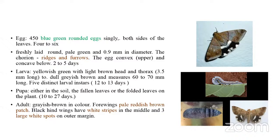The larval period lasts from 12 to 13 days. Pupation takes place either in the soil amidst fallen leaves or on folded leaves on plants. The pupal period lasts about 10 to 27 days. The adult is a grayish brown moth with a pale reddish brown patch on the forewings. The hind wings are black with white stripes in the middle and three large white spots on the outer margin.